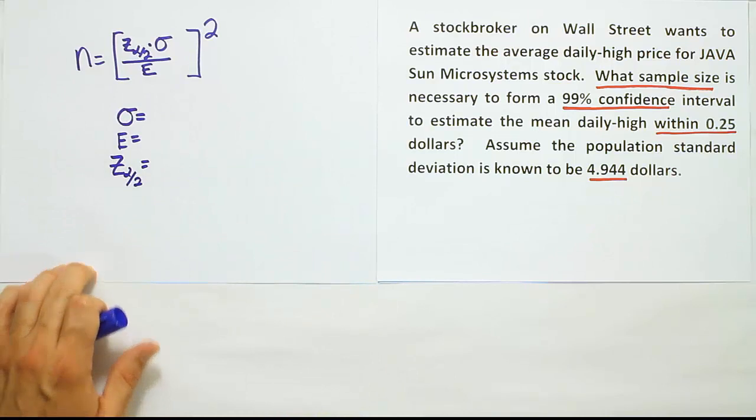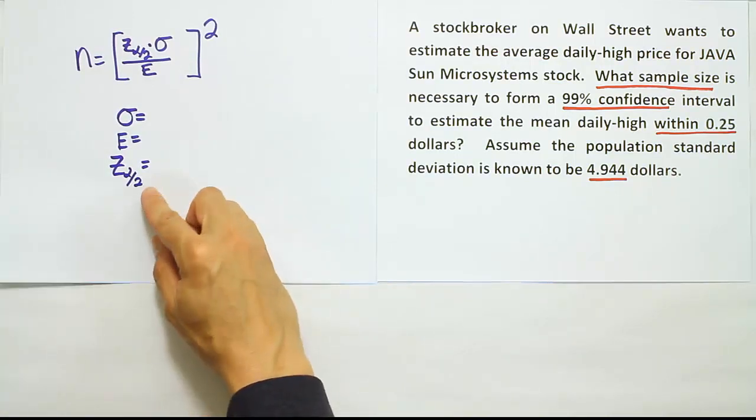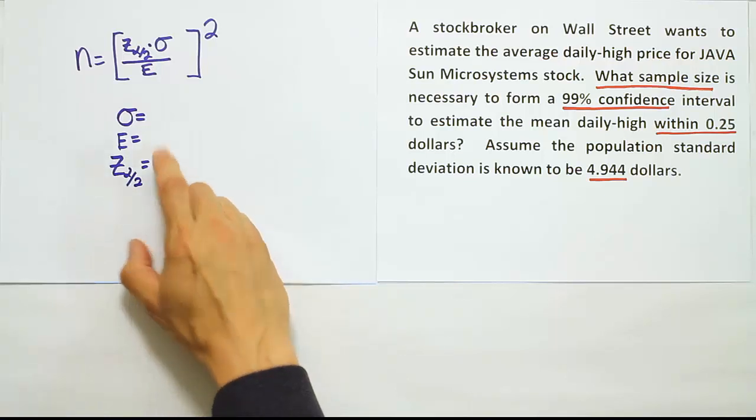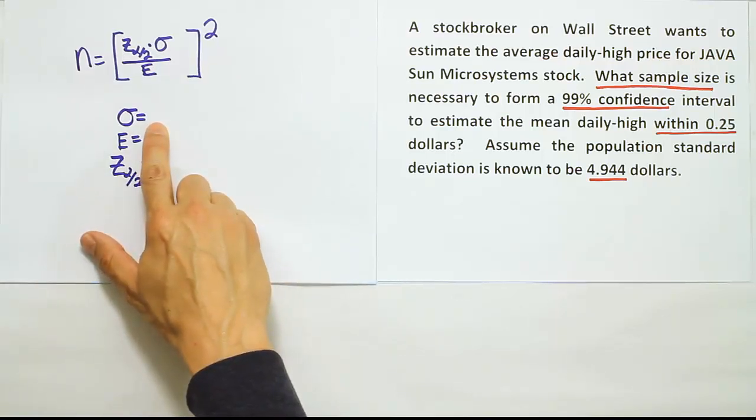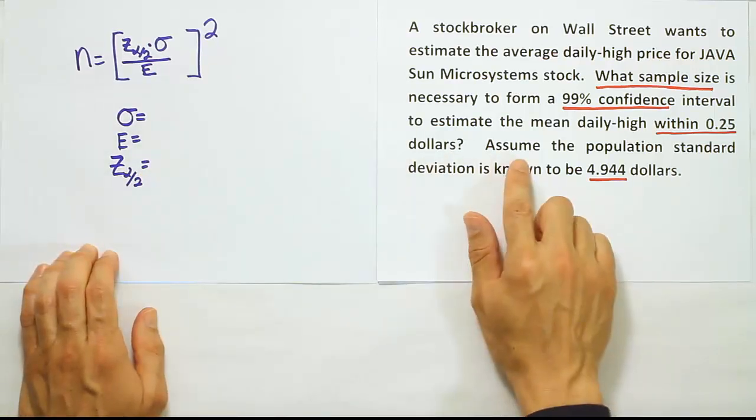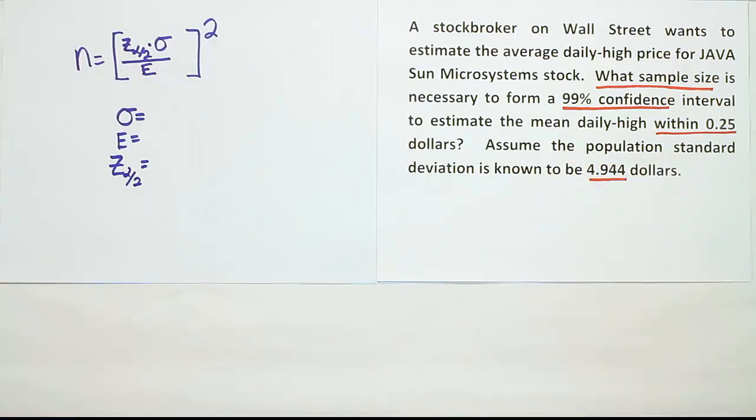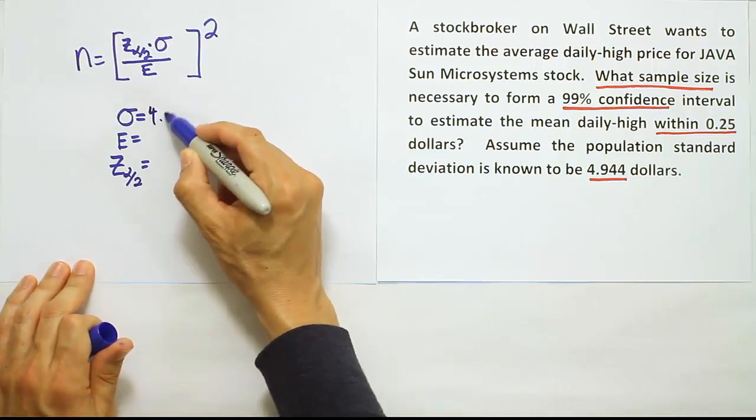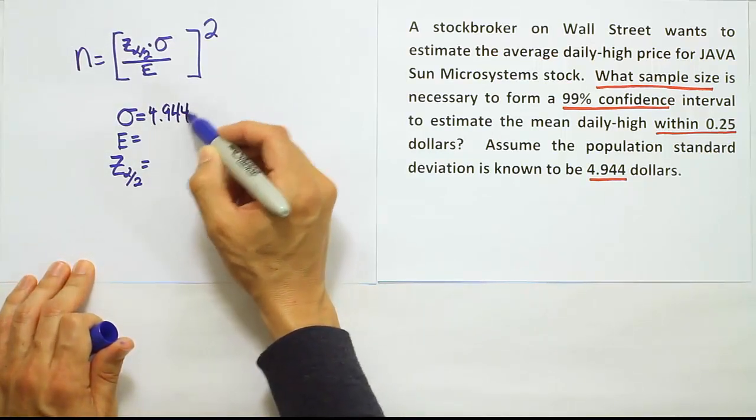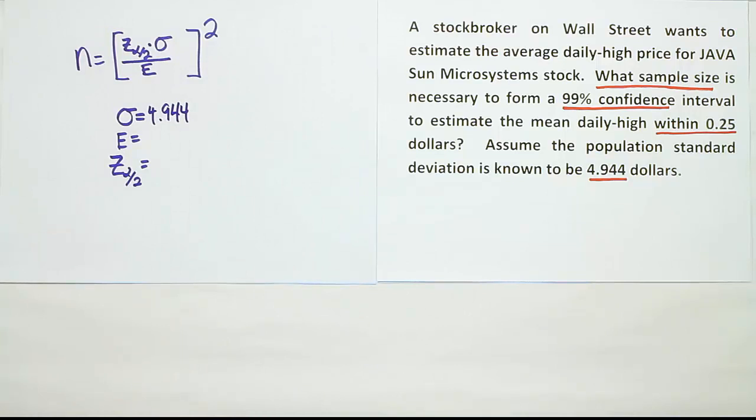This last one is the only one we don't get directly from the wording of the problem. We have information in the problem to help us find it, but we don't get that directly. Let's start with the easiest one then, the standard deviation sigma. It says assume the population standard deviation is known to be 4.944. So we have that value right away, 4.944.